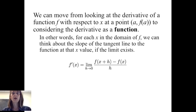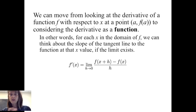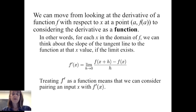What does this mean? For each x in the domain of f, we can think about the slope of the tangent line to the function at that x value if the limit exists. We're talking about the limit of f of x plus h minus f of x divided by h as h goes to 0. But we can also think about x moving throughout the domain, and treating f prime as a function means we can consider pairing an input value x with its slope, f prime of a.